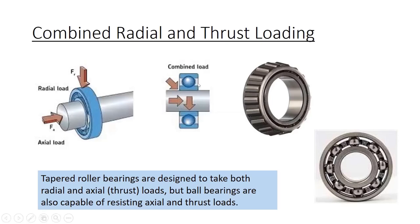If you have a radial load and an axial load on a bearing, it's called a combined load. Where might this come from? It comes from gears like a helical gear or a bevel gear, something that has angled teeth. Tapered roller bearings are designed to take both radial and axial thrust loads, but ball bearings are also capable of resisting axial and thrust loads, although not as good at resisting thrust loads as they are at resisting axial loads.